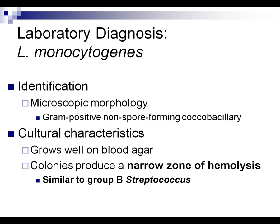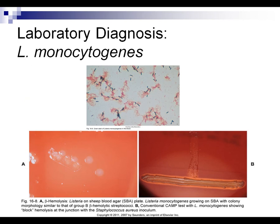To determine if an organism is Listeria, first do your gram stain — you'll see a gram positive non-spore forming coccobacilli. We'll see good growth on blood agar and a very narrow zone of beta hemolysis, just like Group B Streptococcus. We need to differentiate Group B Strep from Listeria since they both have a narrow zone of hemolysis and both are major pathogens causing meningitis in newborns. On the CAMP test, Listeria produces a block-shaped zone of enhanced hemolysis where it meets the Staph aureus isolate.